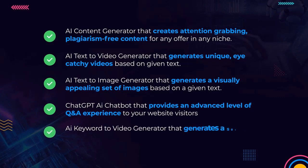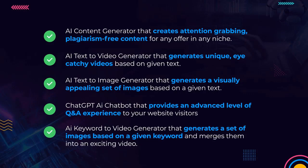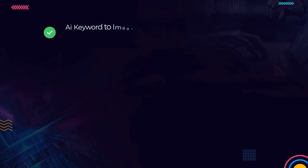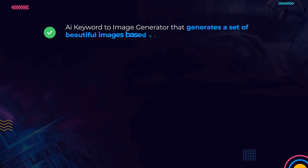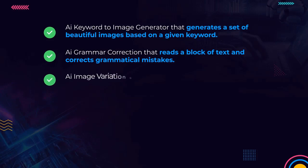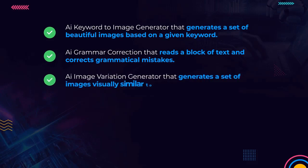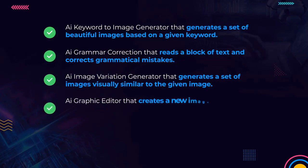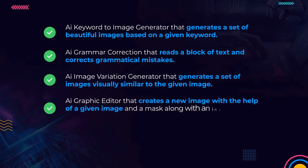An AI keyword-to-video generator that generates a set of images based on a given keyword and merges them into an exciting video. An AI keyword-to-image generator that generates beautiful images based on a given keyword. An AI grammar correction tool that reads a block of text and corrects grammatical mistakes. An AI image variation generator that produces images visually similar to a given image. An AI graphic editor that creates a new image using a given image, a mask, and an instruction to apply modifications.